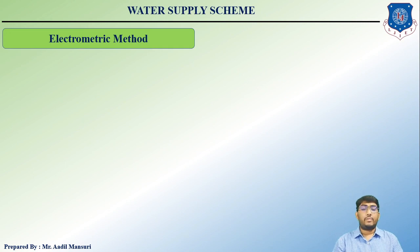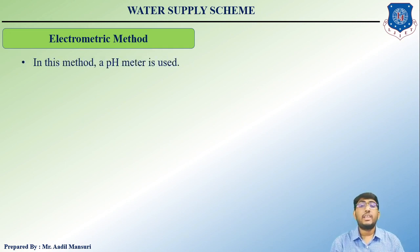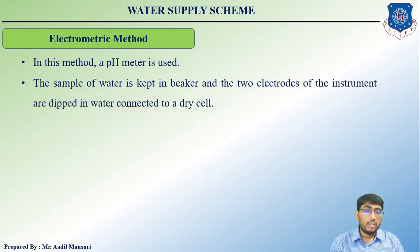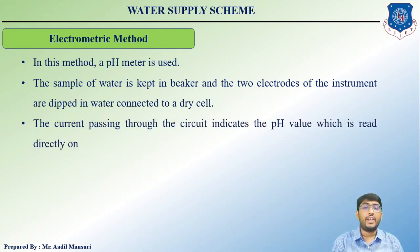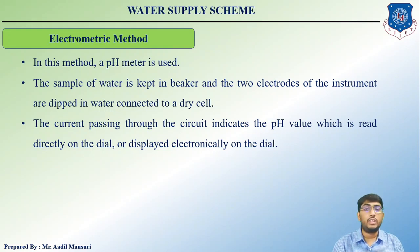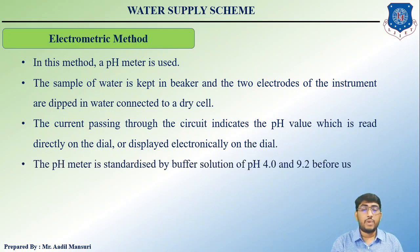In the electrometric method, a pH meter is used. The sample of water is kept in a beaker and the two electrodes of the instrument are dipped into the water, connected to a dry cell. The current passing through the circuit indicates the pH value, which is read directly on the dial or displayed electronically. The pH meter is standardized using buffer solutions of pH 4 and 9.2 before use.